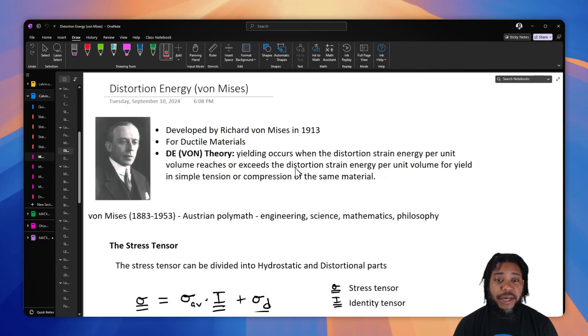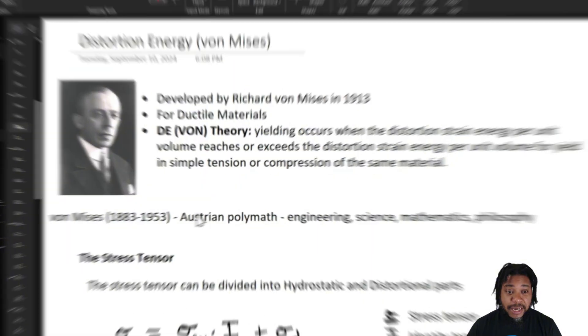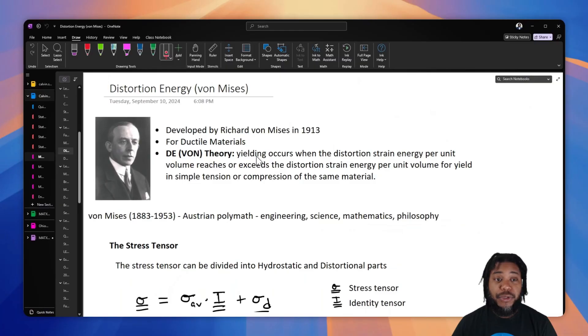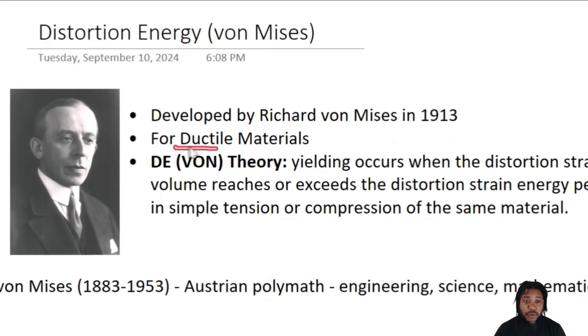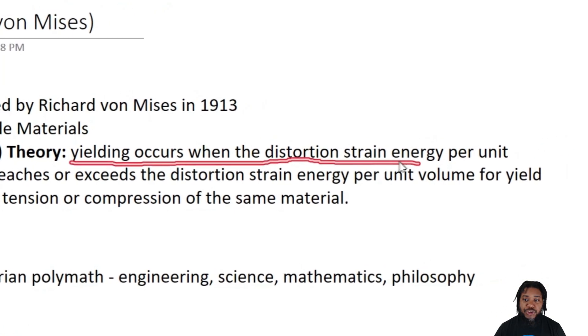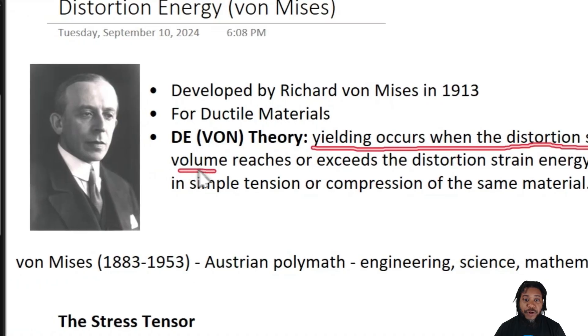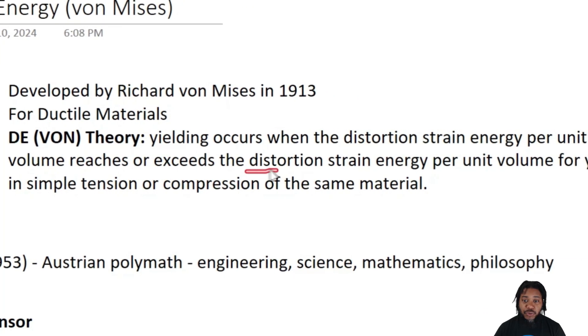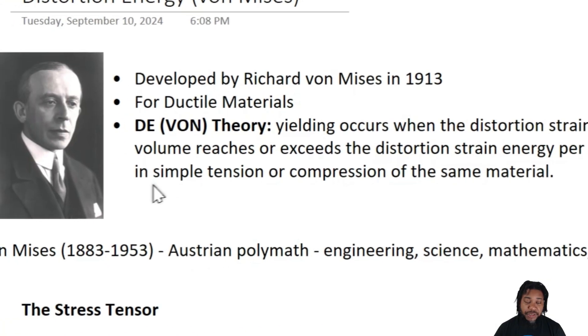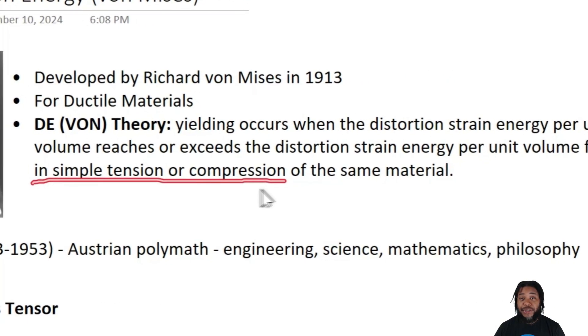Now this theory was developed by Richard von Mises in about 1913. Von Mises was an Austrian polymath, meaning he was a great engineer, scientist, mathematician, as well as philosopher. He developed this theory for ductile materials, and the theory states that yielding occurs when the distortion strain energy per unit volume reaches or exceeds the distortion strain energy per unit volume for yielding in a simple tension or compression test.